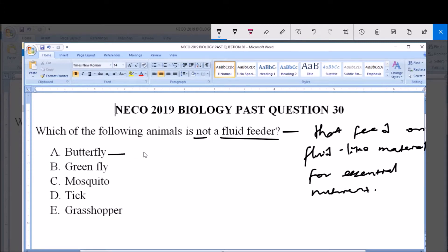Option A says butterfly. Butterfly is a fluid feeder because it sucks the nectar present in flowers. You notice that butterfly is always found near flowering plants. This is because they feed on the nectar of these flowering plants.